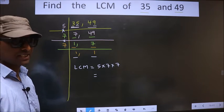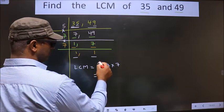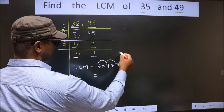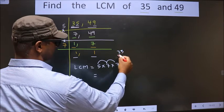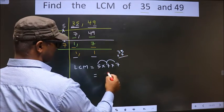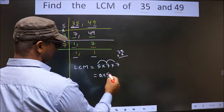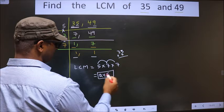So let us multiply. 5 into 7, 35. 35 into 7. 7 times 5 is 35. 7 times 3 is 21 plus 3, 24. So we get 245.